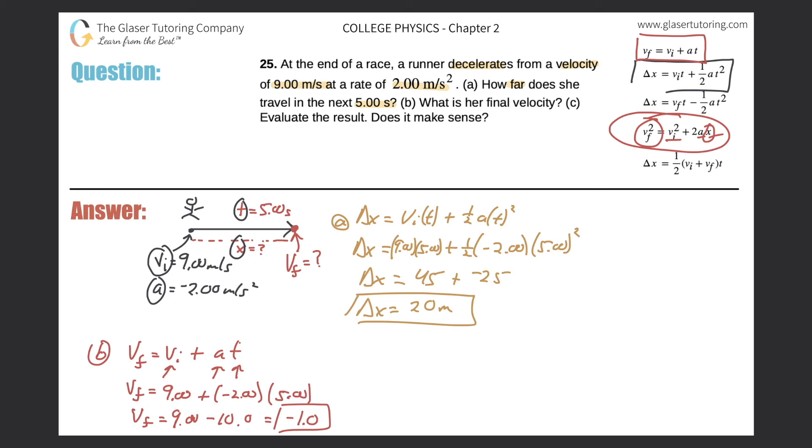Well, the runner, she ended the race, right? And I assume she's going to come to a stop, which means that her velocity, well, her velocity, final velocity could have been zero, but maybe she didn't come to a stop yet. So maybe it was less than the nine meters per second that she started out at. I don't know, maybe it'd be seven or six or five or four or three or two or one or all the way to zero.